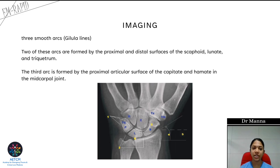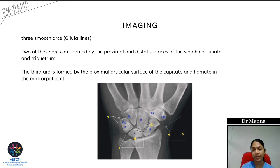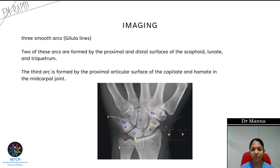When we take an X-ray of the wrist we can see Gilula lines — three smooth arcs seen in the wrist. The first arc is formed by the proximal surface of the proximal carpal bones: the scaphoid, lunate, and triquetrum. The second arc is formed by the distal surface of the scaphoid, lunate, and triquetrum. The third arc is formed by the proximal articular surface of the capitate and hamate at the midcarpal joint. These three lines are delineated in the figure shown.